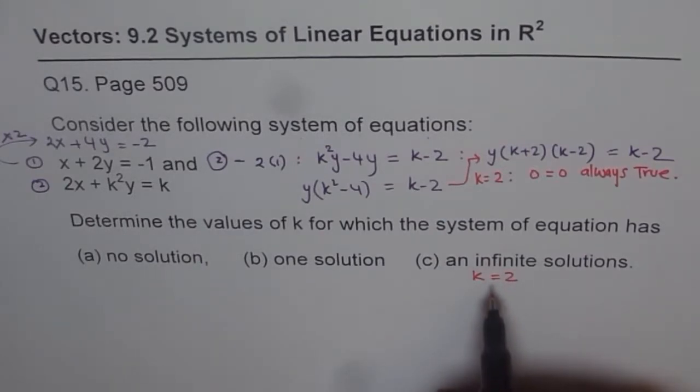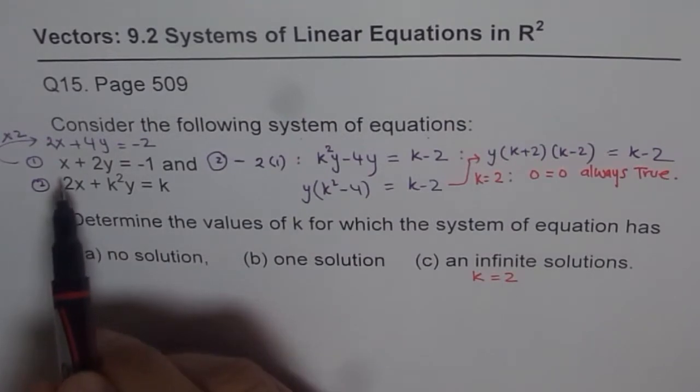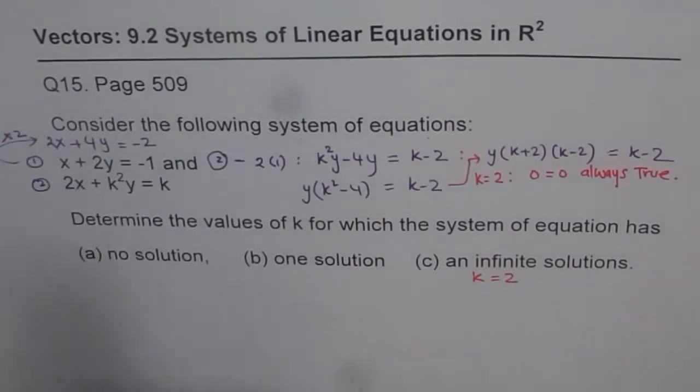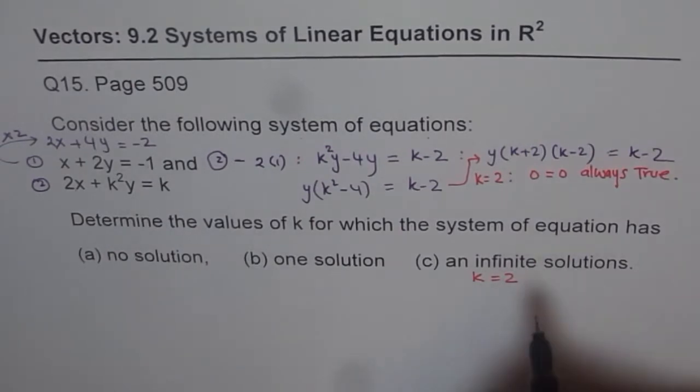Now, as an additional work, I'll request you to check from here also. Both the equations will be exactly same. If you put k equals to 2 here, you will get this equation as x plus 2y equals to minus 1 after simplification. So that is first solution.